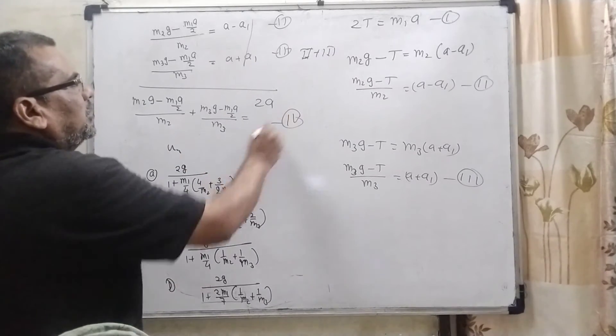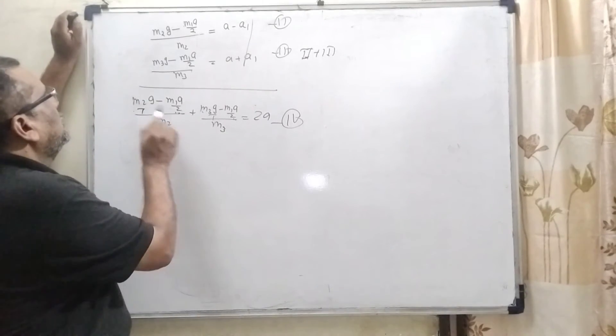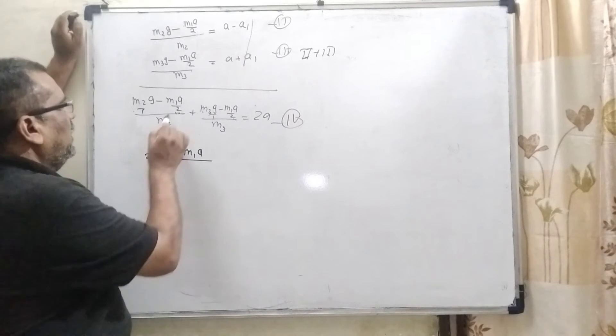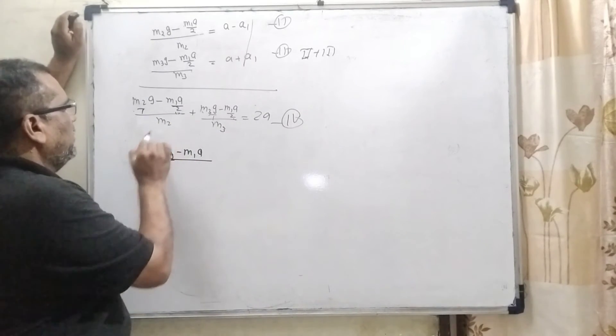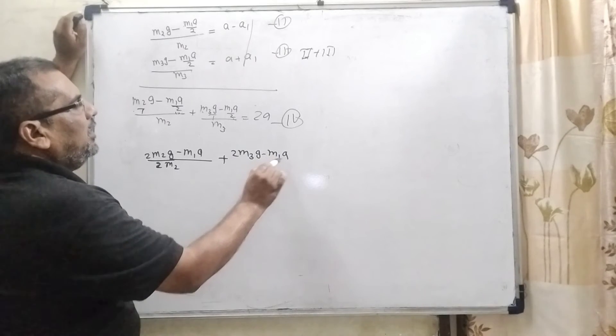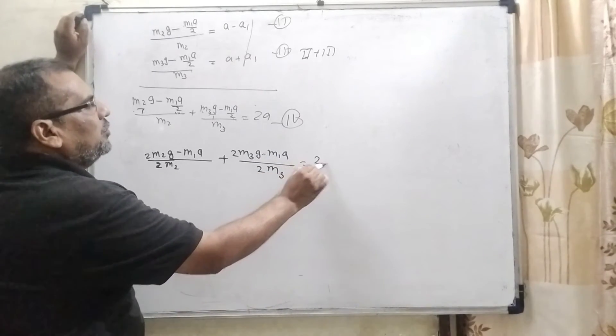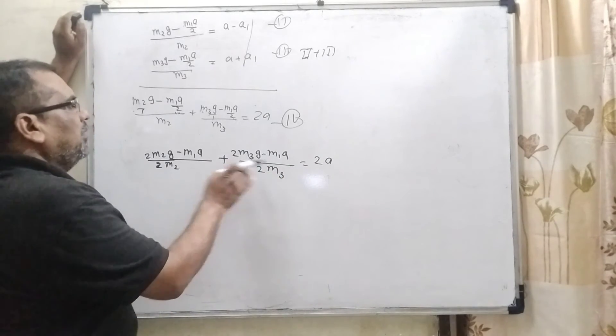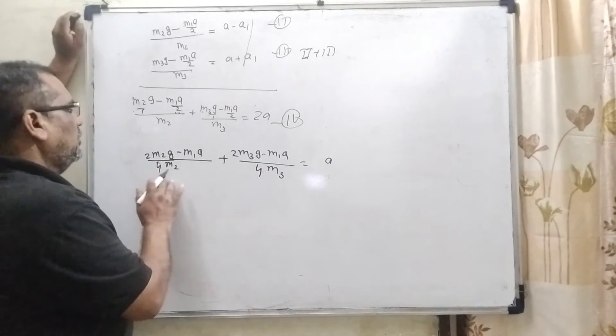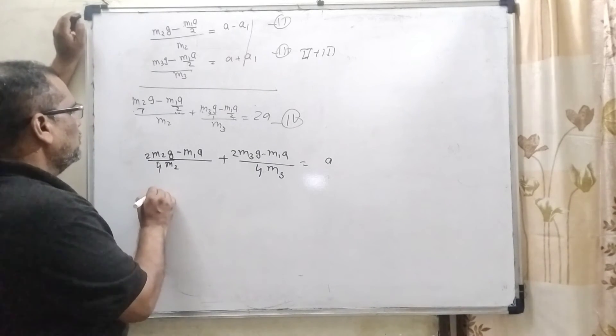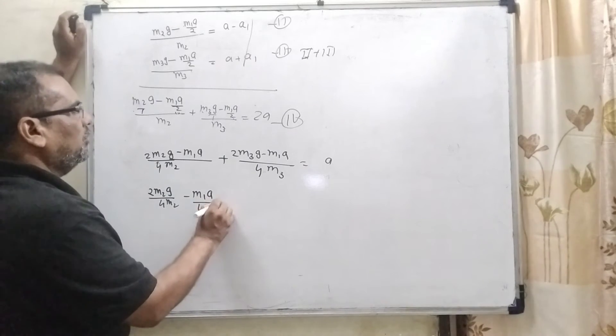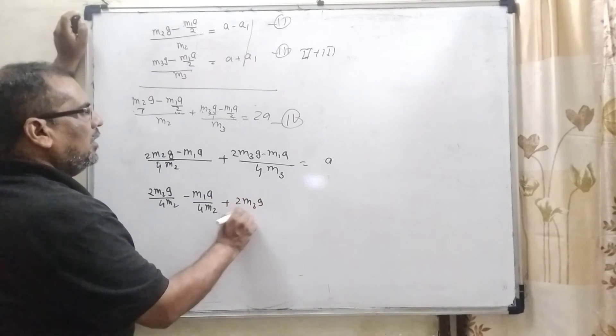So now, solving, taking the LCM, this is 2, 2 M2 G minus M1 A by 2 M2. Similarly, here also 2 M3 G minus M1 A by 2 M3 equal to 2 A. Now, these 2 also transposing, 2 M2 G minus M1 A plus 2 M3 G minus M1 A upon 4 equal to A.